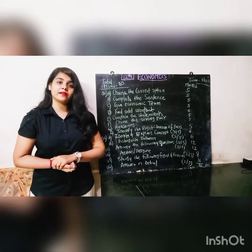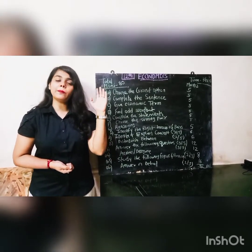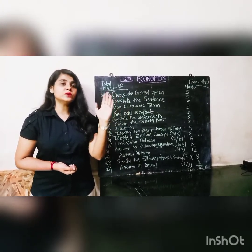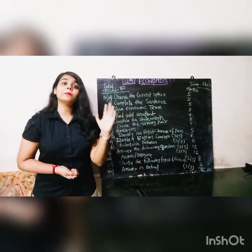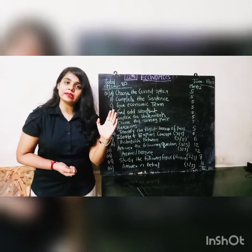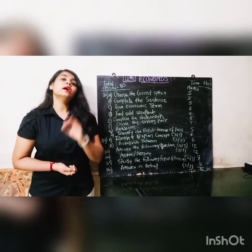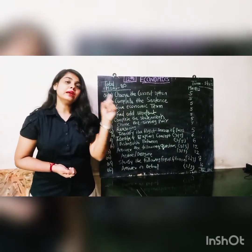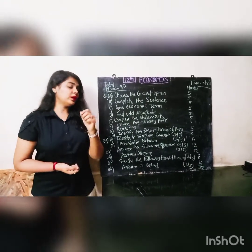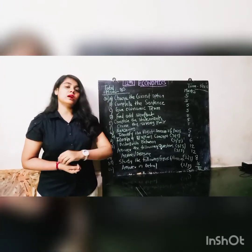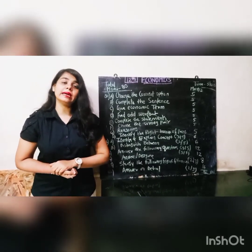Question number five is Study the Following Figure or Passage — this is newly introduced in the new paper pattern. Similar to passages in English, you will find certain passages and figures in the exercises at the back of your textbook. You have to study the passage and answer the questions, which carries eight marks — you attempt two, so one is for four marks. Question number six is Answer in Detail, for sixteen marks — three questions will be given, you attempt two, and each carries eight marks.